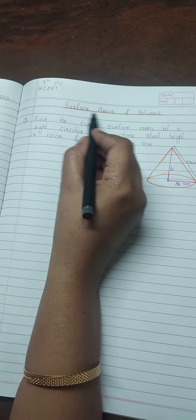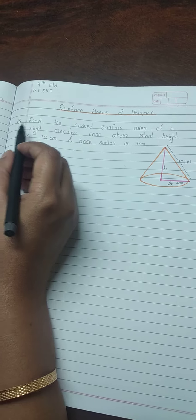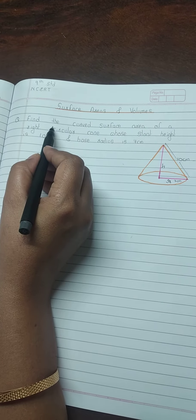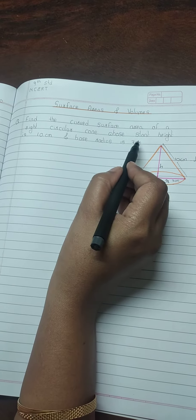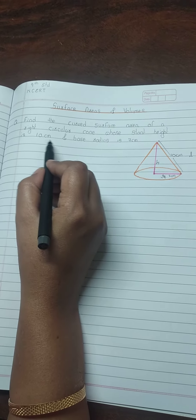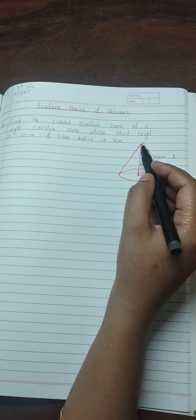Chapter name is Surface Areas and Volumes. Question: Find the curved surface area of a right circular cone whose slant height is 10 cm and base radius is 7 cm.